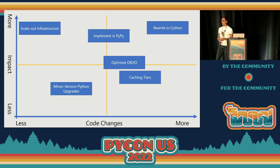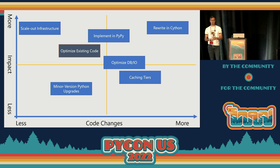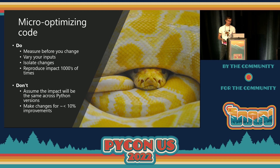Minor version Python upgrades — moving from 3.8 to 3.9 or 3.9 to 3.10 — each normally comes with a 5 to 10% performance increase. Python 3.11 is looking like a 25% performance gain on 3.10, which is awesome. And then what I want to talk about is optimizing existing code — micro-optimizations to Python code. Before you jump in, there are some things you definitely want to do.